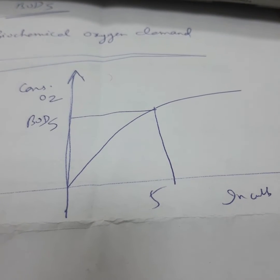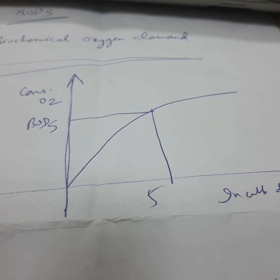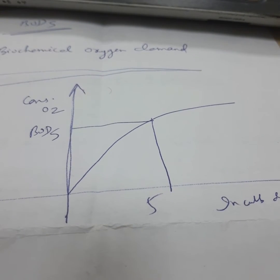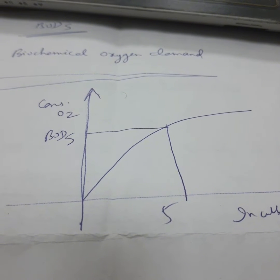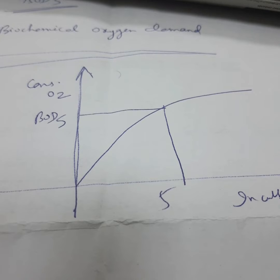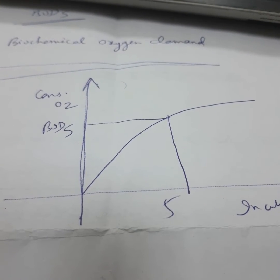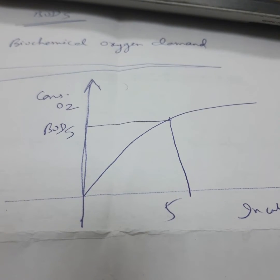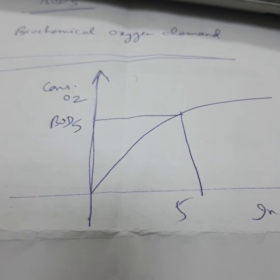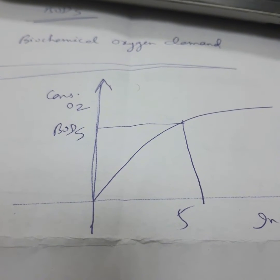The total content of biodegradable organic matter is measured over 21 days, by which we assume 99% of the organic matter has degraded. The test measures the molecular oxygen utilized during the specified incubation period for the biochemical degradation of organic material — the carbonaceous demand — and the oxygen used to oxidize inorganic materials such as sulfides and ferrous ions. Nitrification will interfere with BOD measurements and an inhibitor is required to prevent this; two drops of the inhibitor should be added.